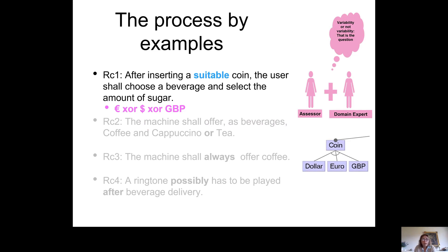Consider requirement number one: after inserting a suitable coin, the user should select a beverage and the amount of sugar. 'Suitable' might mean 20 cents, 50 cents, or one euro. A producer could decide to produce machines for different markets — euros, dollars, and pounds — and there is a fragment of a feature diagram here that models that.